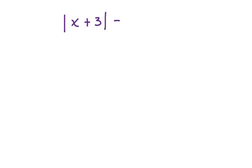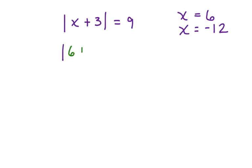Let's test it out. So we have the absolute value of x plus 3 is equal to 9, and our possible answers are that x is equal to 6 and that x is equal to negative 12. Let's start with the 6. If we substitute 6 in for x, we have the absolute value of 6 plus 3, which equals 9. The absolute value of 9 is equal to 9 — this answer checks.